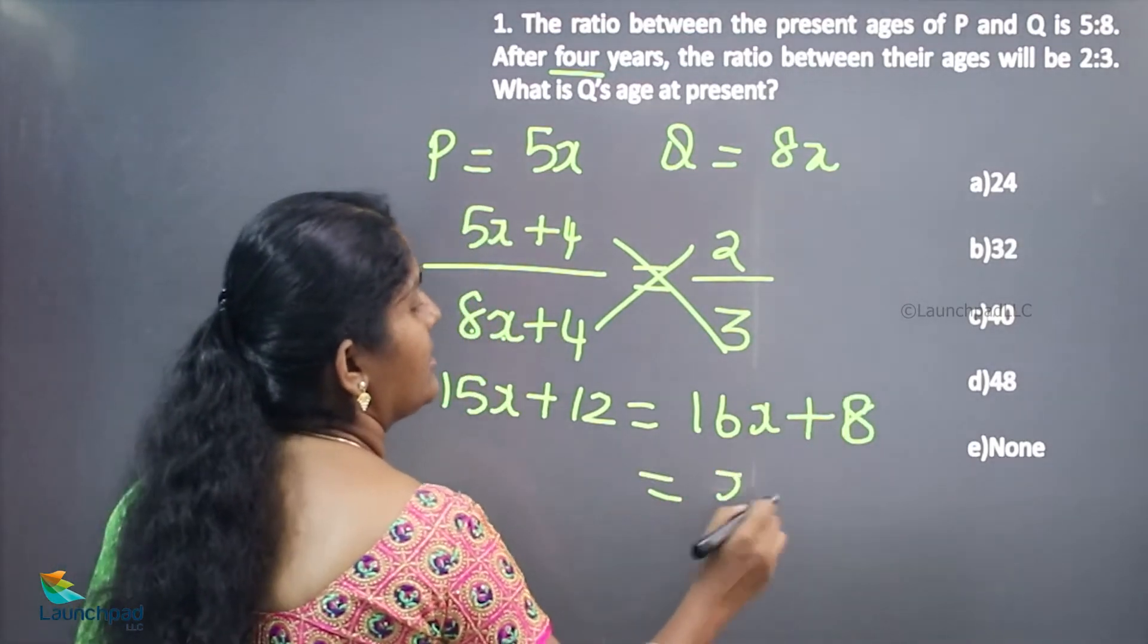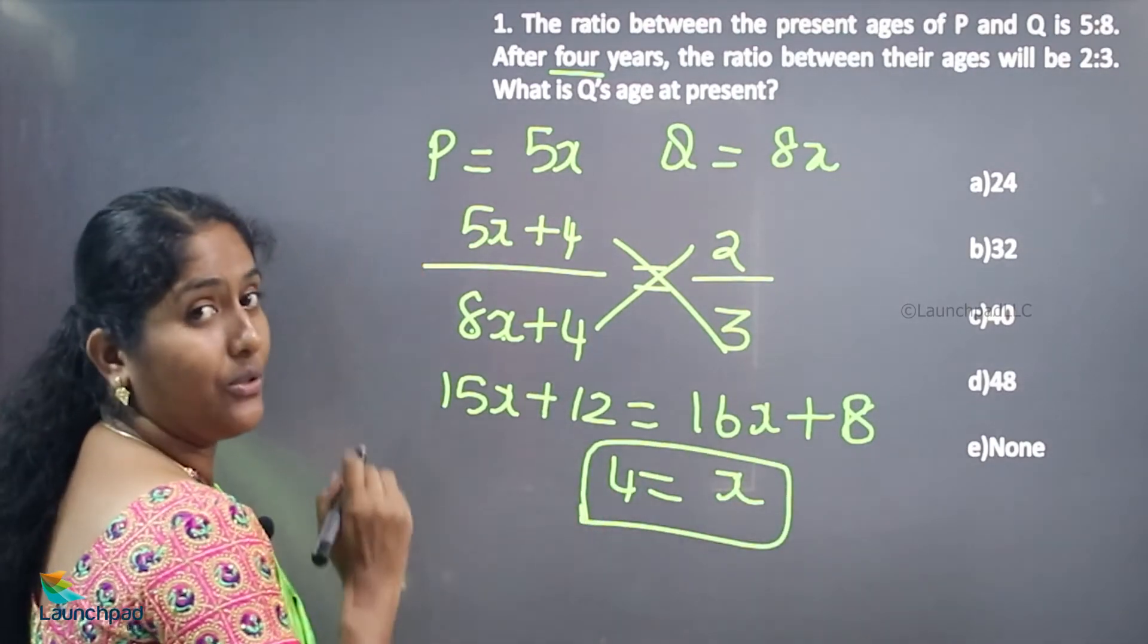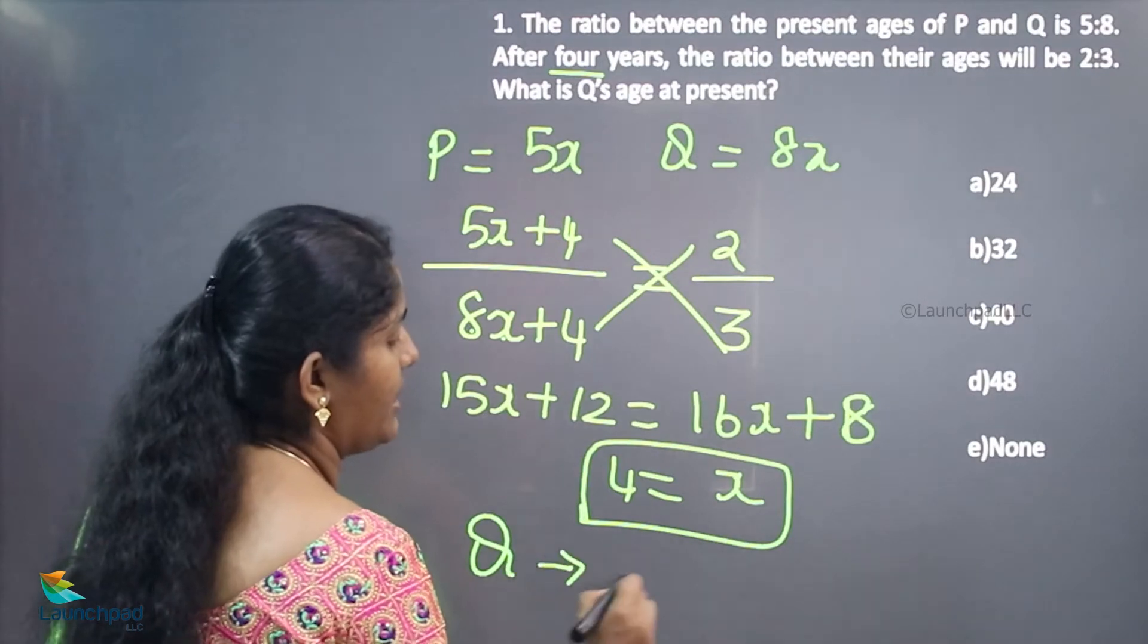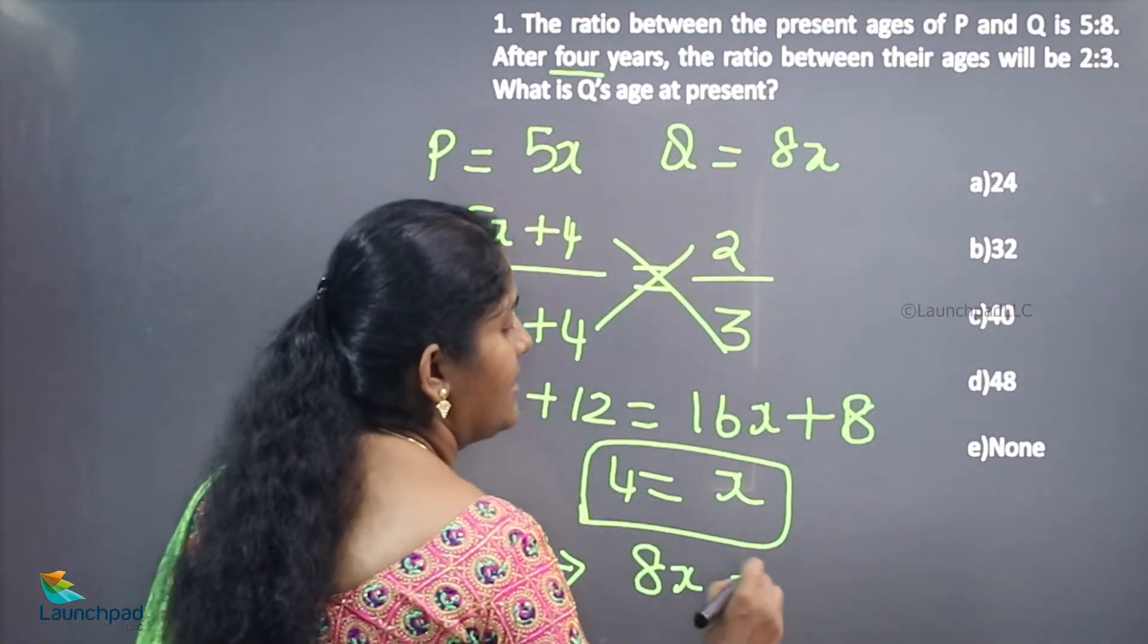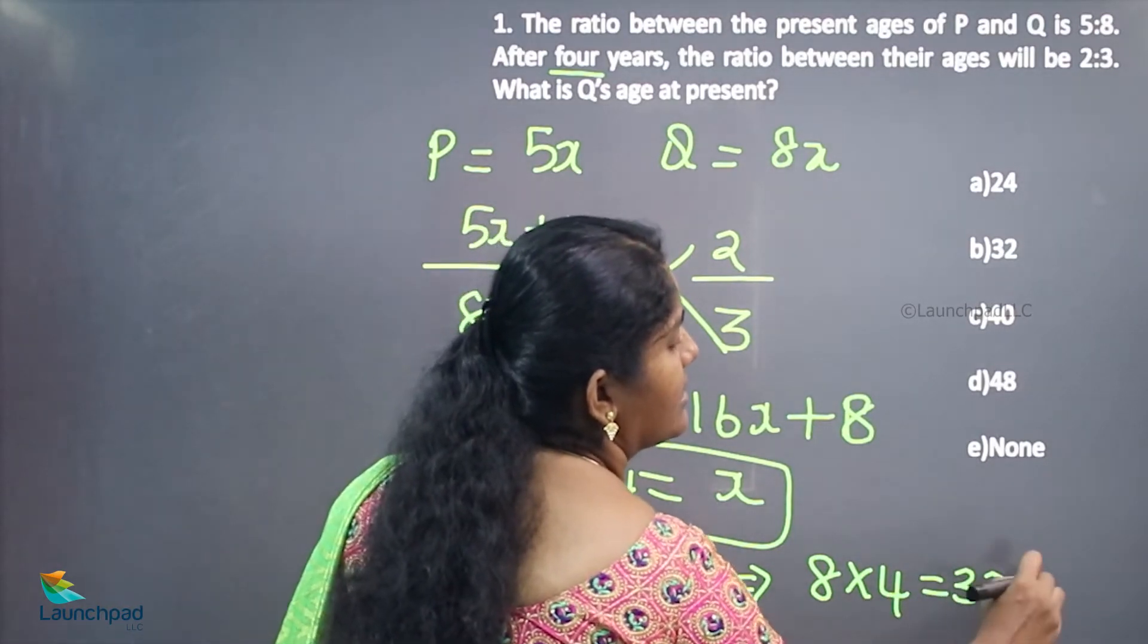So 12 minus 8 is 4, and 16X minus 15X is X. Therefore, X value is 4. Q's present age will be 8X, so 8 times 4 is 32 years.